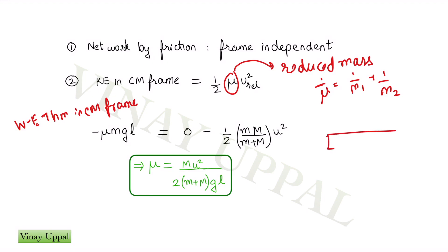So initially, the block is gently placed. So it is at rest in the ground frame initially, but the plank has some velocity u. So u_relative initially is simply u.